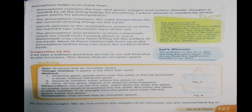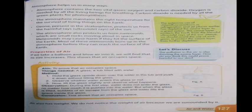The atmosphere also protects us from meteorites, which are small rocks moving in space. These meteorites may cause harm if they hit the surface of the earth, but most of them burn up in the atmosphere before they can reach the earth's surface.